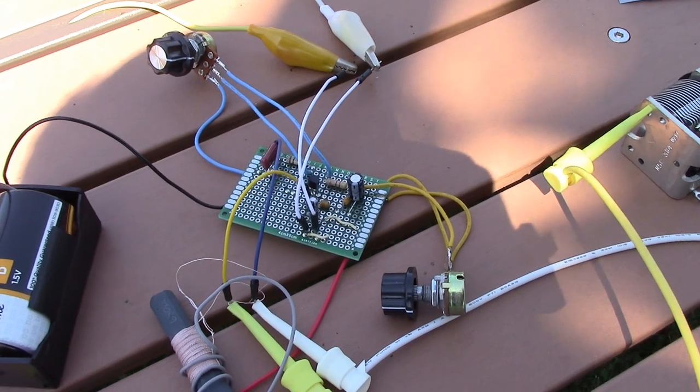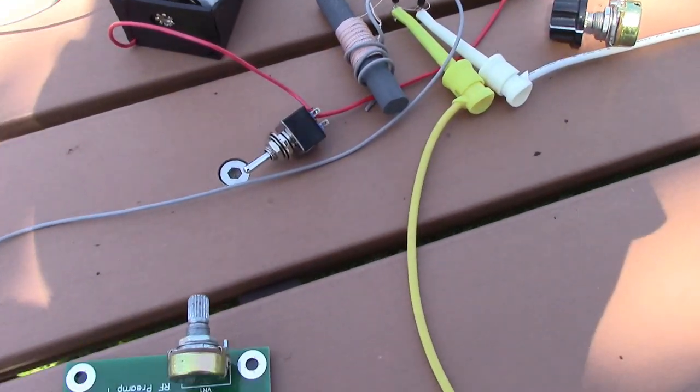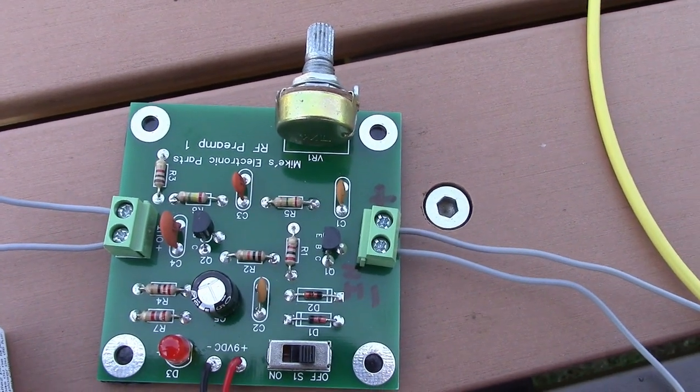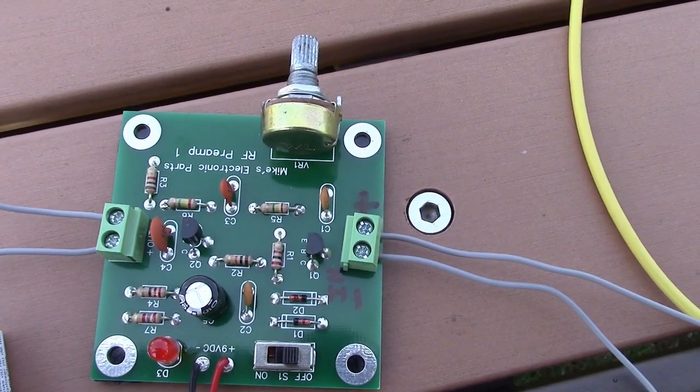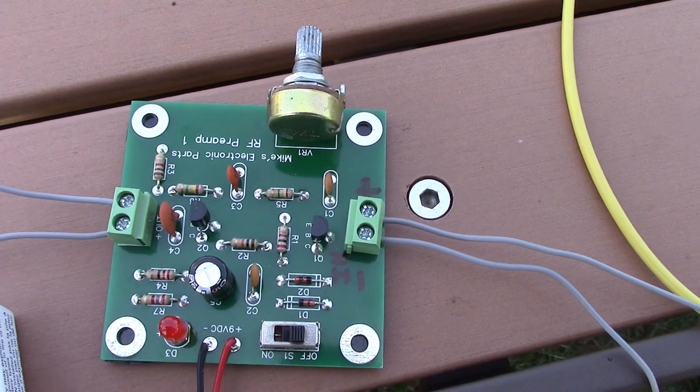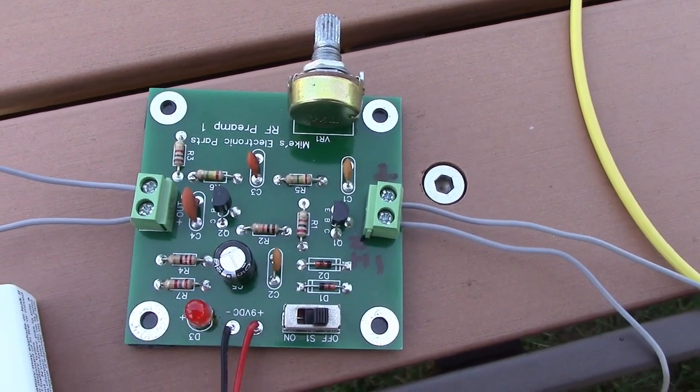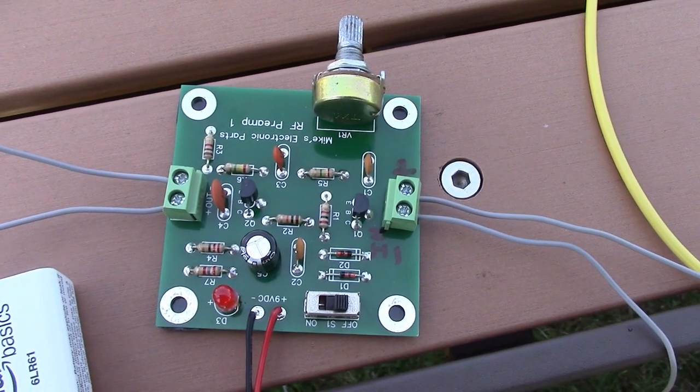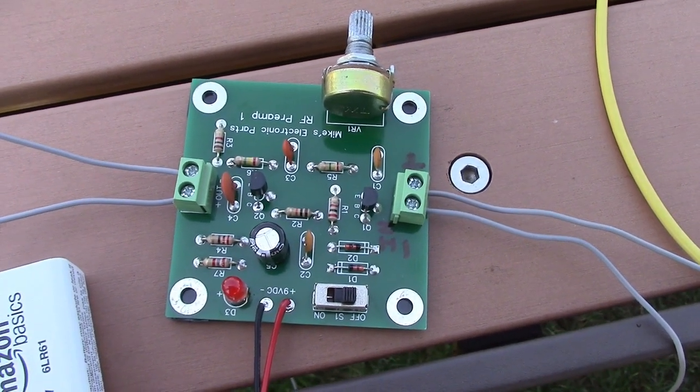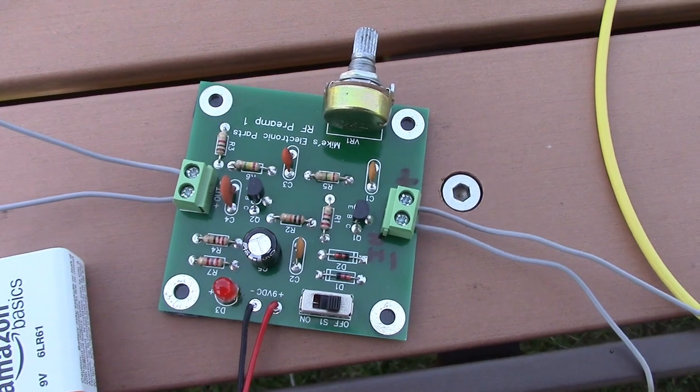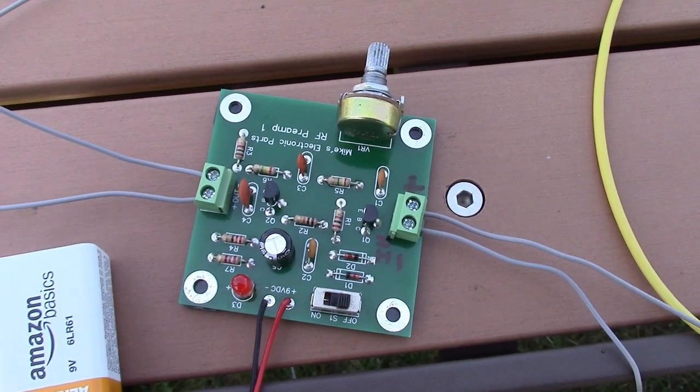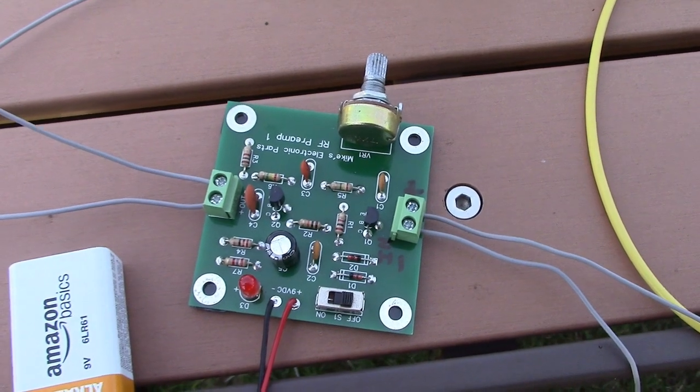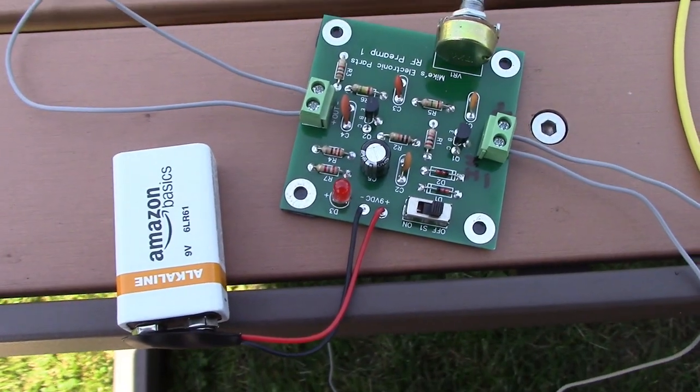I just built this preamp. Mike's Electronic Parts website has this preamp for about twelve dollars. It's good for frequencies from I think 100 kilohertz up to 25 megahertz or so, definitely within the AM band which I'm trying to amplify here. It just runs on a nine volt battery.